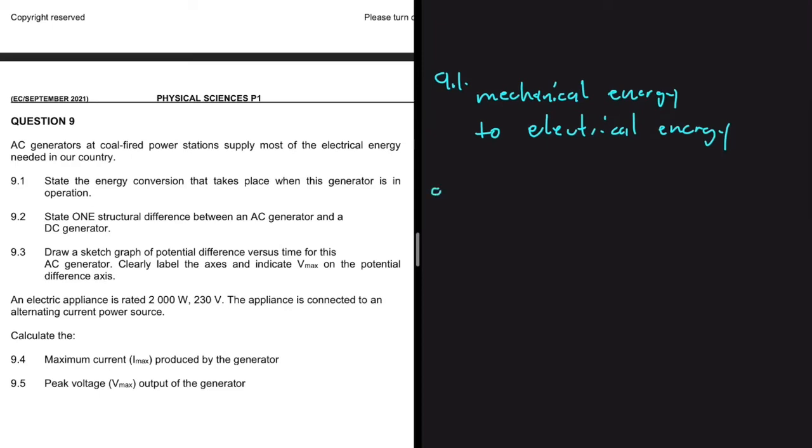And then 9.2 says, state one structural difference between an AC generator and a DC generator. This one is very tricky. For an AC generator, we have slip rings. Let me write it down, slip rings. And then for a DC generator, we have a split ring.